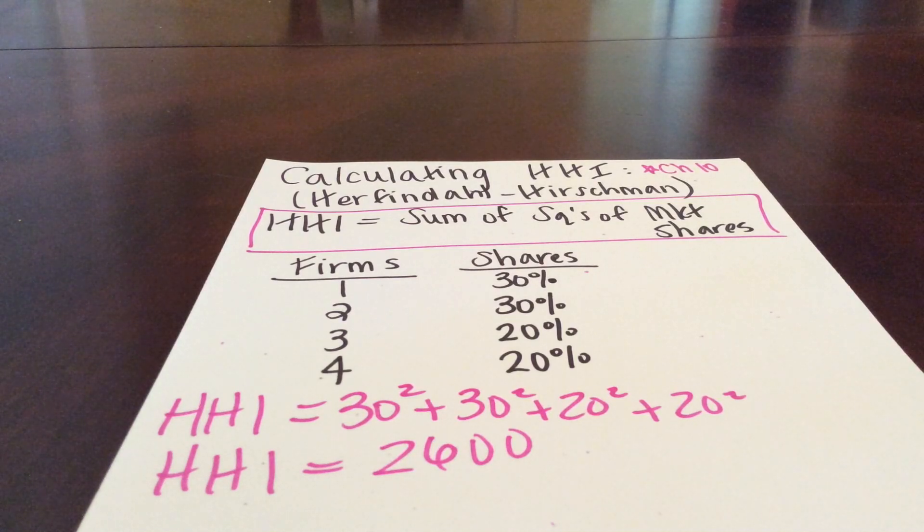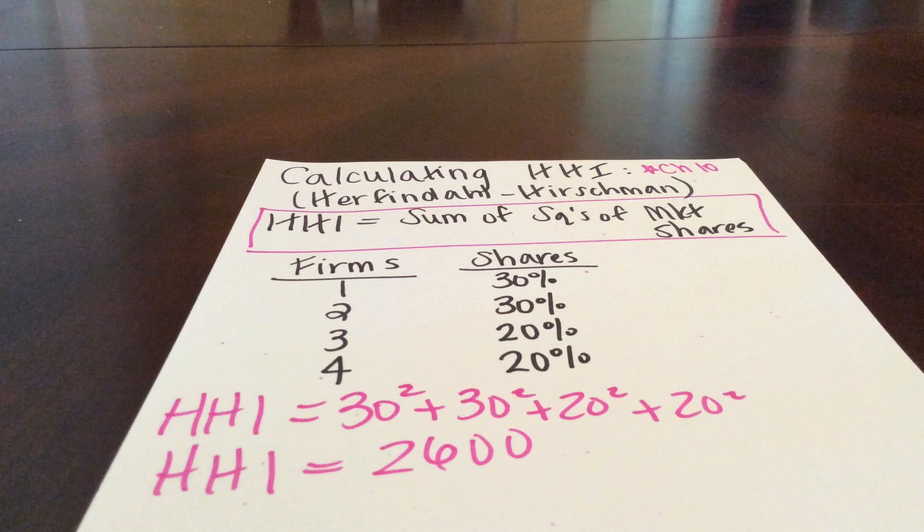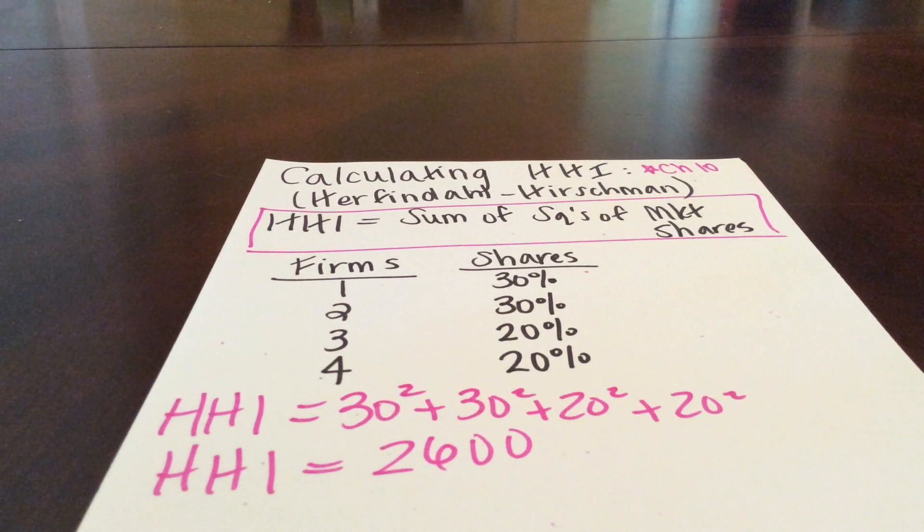Now, we would typically say that markets where the HHI is between 1,000 and 1,800 are moderately concentrated, and anything with HHI in excess of 1,800, we would say is very concentrated, so not competitive.